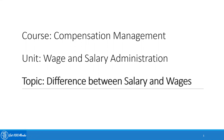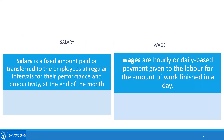Welcome to the video course on compensation management, unit: wage and salary administration, topic: difference between salary and wages, explained in different slides. Salary is a fixed amount paid or transferred to employees at regular intervals for their performance and productivity at the end of the month. Wages are hourly or daily based payments given to labor for the amount of work finished in a day.